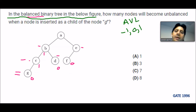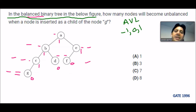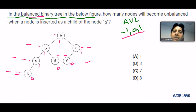For node E: F is on the left hand side giving one level, and there is nothing on the right hand side, so 1 minus 0 is 1. For root node A: there are three levels on the left hand side and two levels on the right hand side, so 3 minus 2 is 1. All nodes have balancing factors of 0 or 1, which satisfies the AVL condition, confirming the tree is balanced.